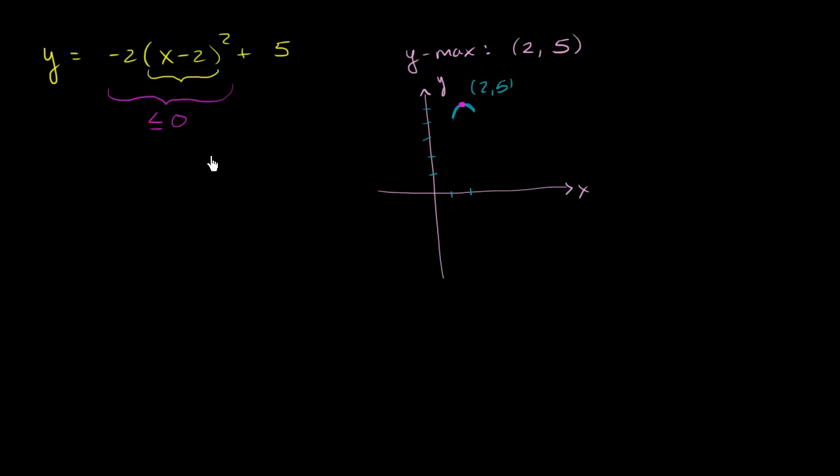Now what I'd like to do is just get two points that are equidistant from the vertex. And the easiest way to do that is to maybe figure out what happens when x is equal to 1 and when x is equal to 3. So I can make a table here, actually. So I care about x being equal to 1, 2, and 3, and what the corresponding y is. We already know that when x is equal to 2, y is equal to 5. 2 comma 5 is our vertex.